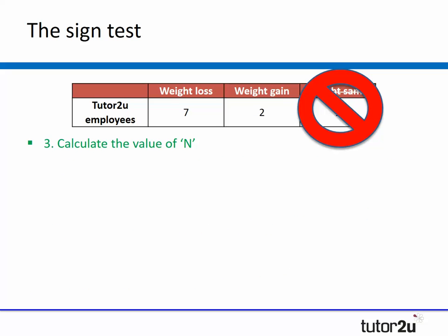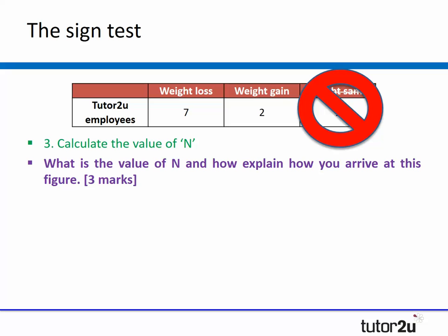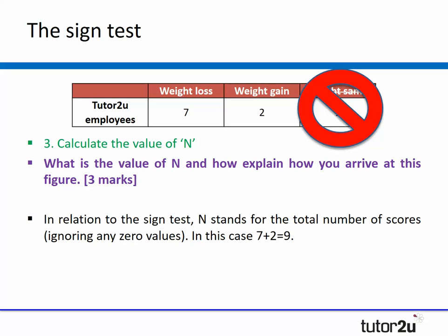Another question they could be asked is to calculate the value of n. The value of n, if we're going to explain how we arrived at this figure, is the total number of scores, but again not including any nil values. In this case it would be very easy, you do your seven plus your two, which gives us an n value of nine.